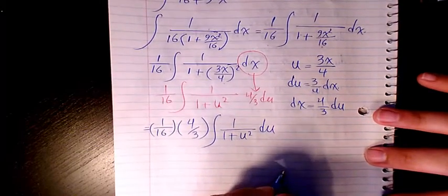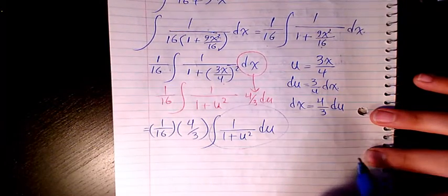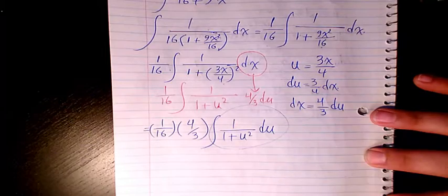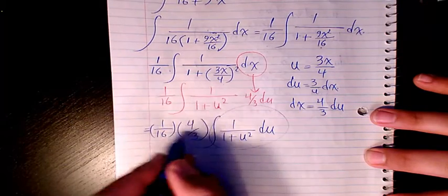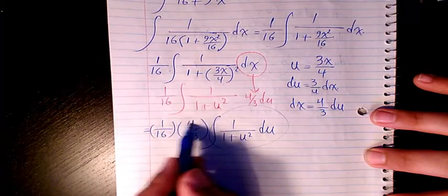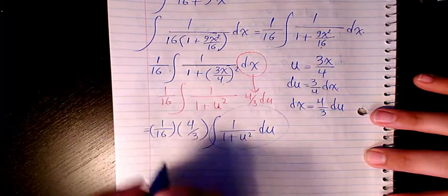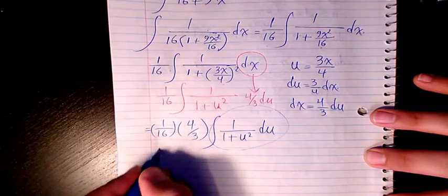And the integration of 1 over 1 plus u squared is arctan u. I multiply these two, it's going to be 4 over 16 times 3 is 48, or if you reduce it, it's going to be 1 over 12.